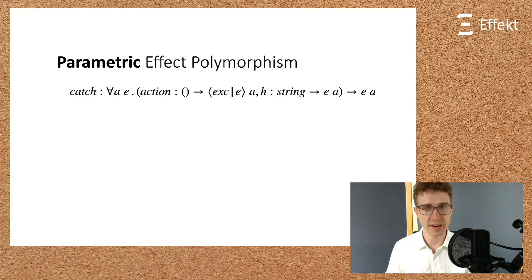The catch function is polymorphic in both the value type A and the effect row E. It expects two argument functions, an action and a handler H, and uses the handler to remove the exception effect from action. Both action and the handler H can have additional effects E. We call this form of effect polymorphism parametric effect polymorphism, since catch is parametric in E. Parametric effect polymorphism means that we explicitly bind and reference effect variables, E in this case. Effect polymorphism is great since it allows us to use the catch function with many different argument functions for action using potentially different effects.